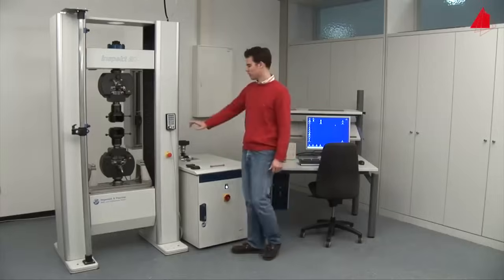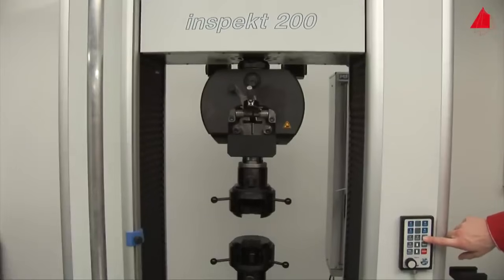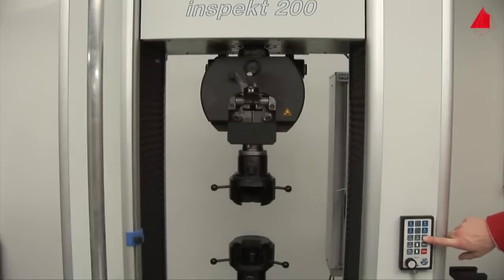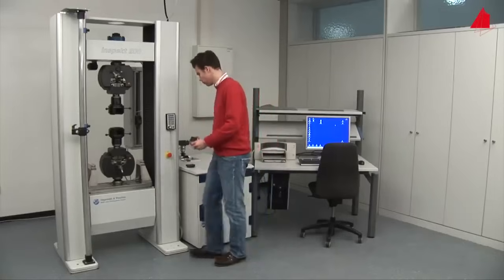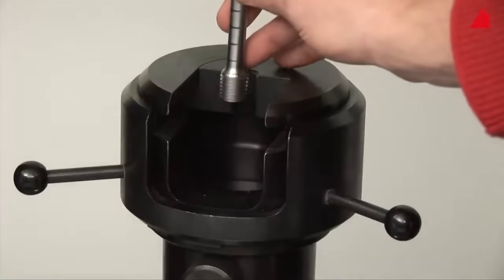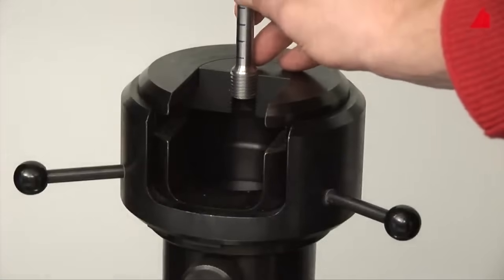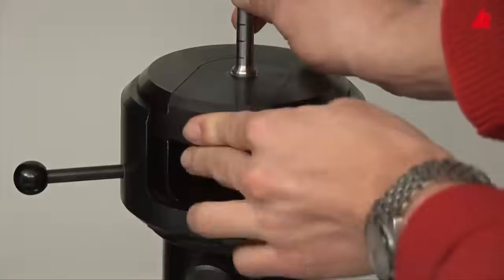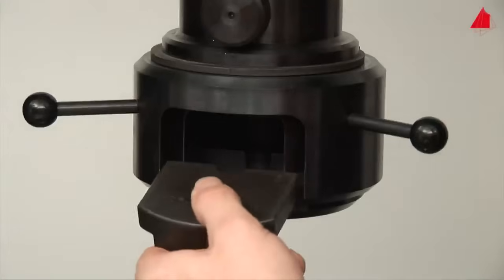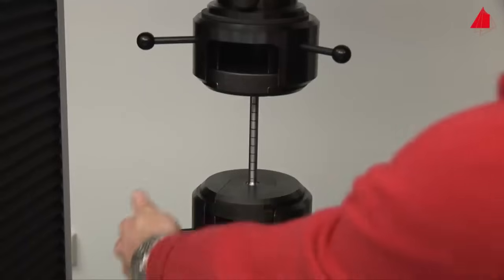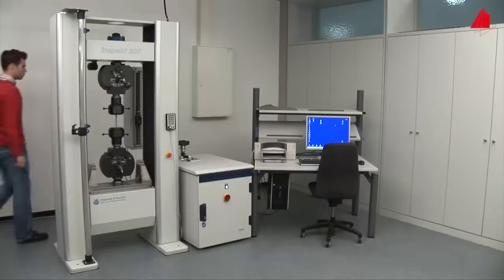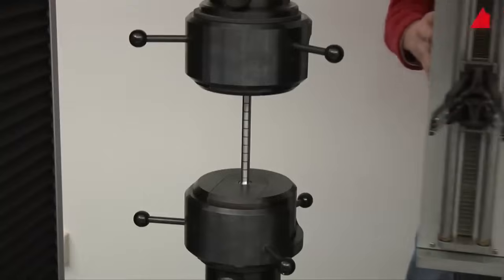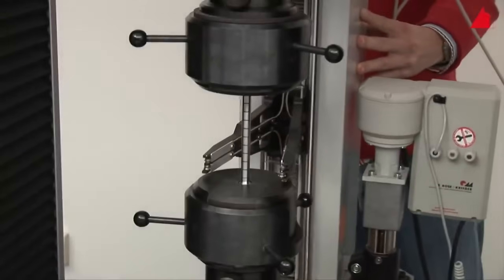Using a hand control, the tester moves the upper crosshead into its correct starting position. Now we can place the threaded ends of the test piece in the lower and upper grips of the testing machine. In the next step, he swings the extensometer into its working position and checks that everything is correctly prepared.